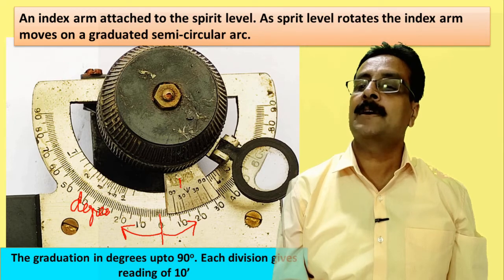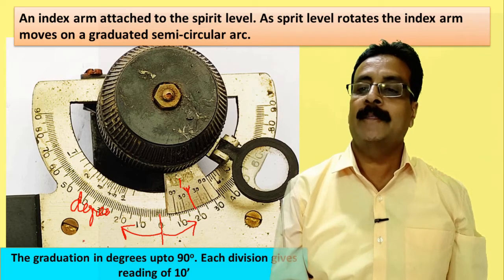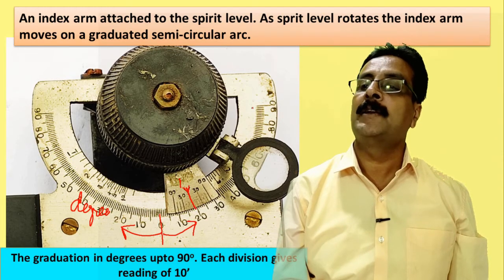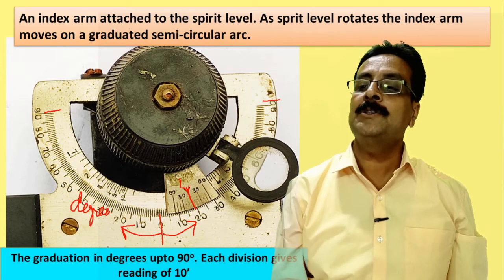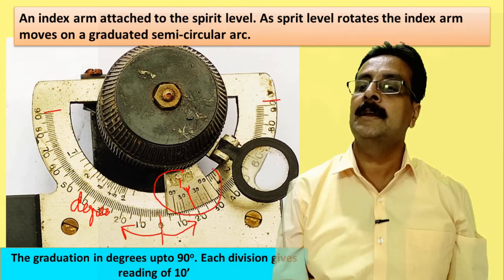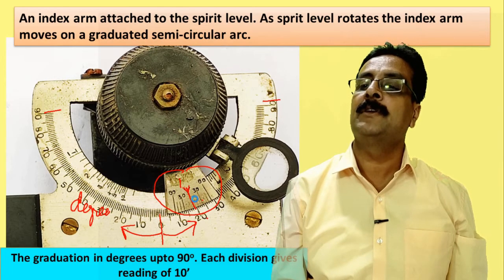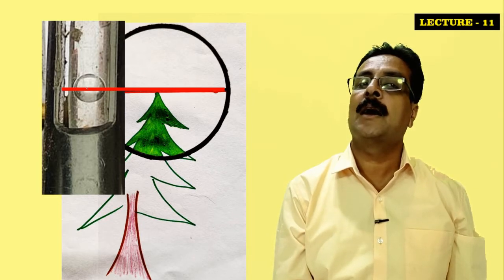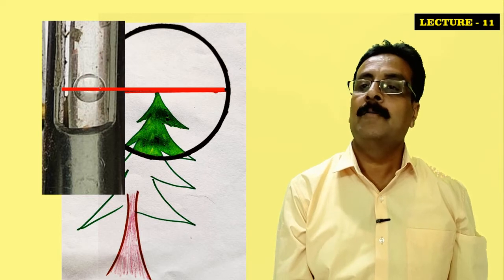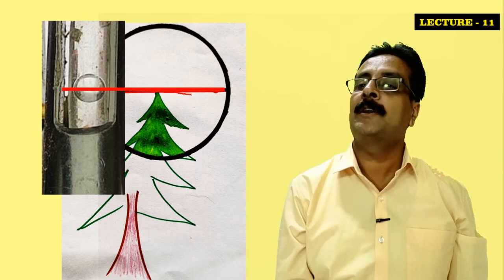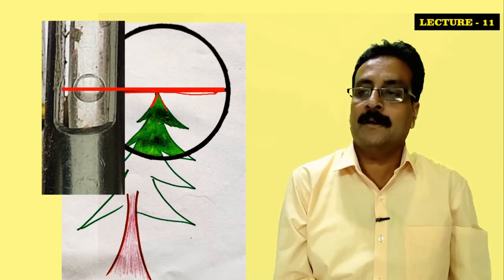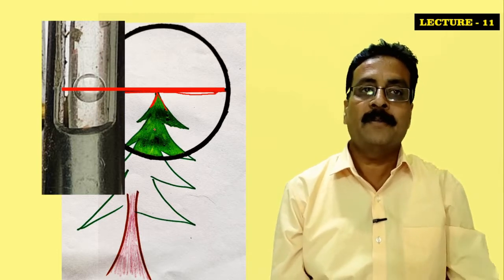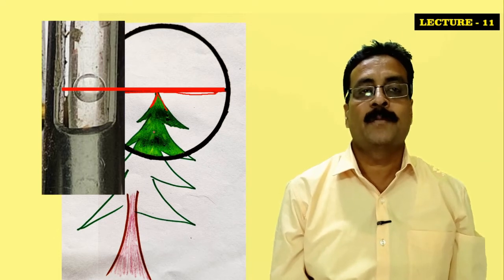The index arm has an arrow that points to the reading. The arc is graduated to 90 degrees on each side. Each division of the vernier scale gives a reading of 10 minutes — degrees are read from the main scale and minutes from the vernier. When peeping through the instrument, you must align the bubble with the horizontal wire to the tip of the tree.